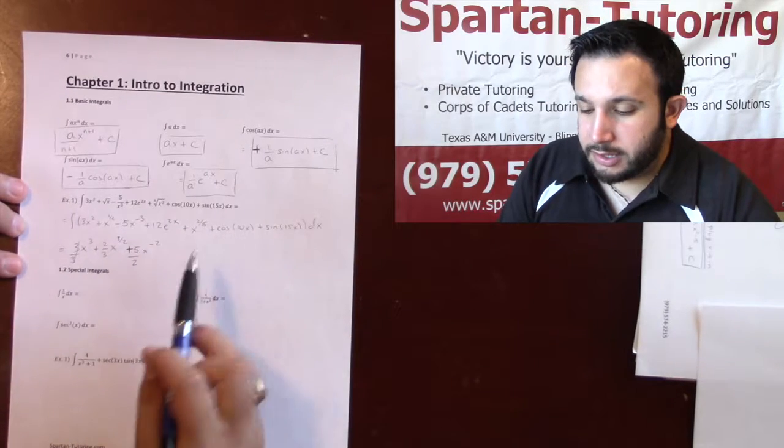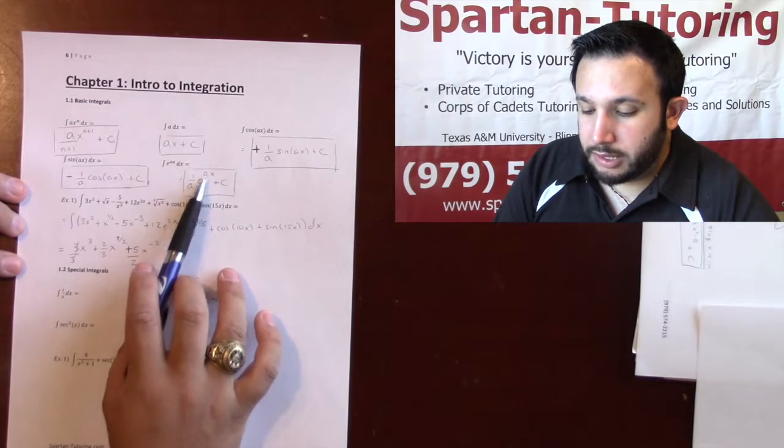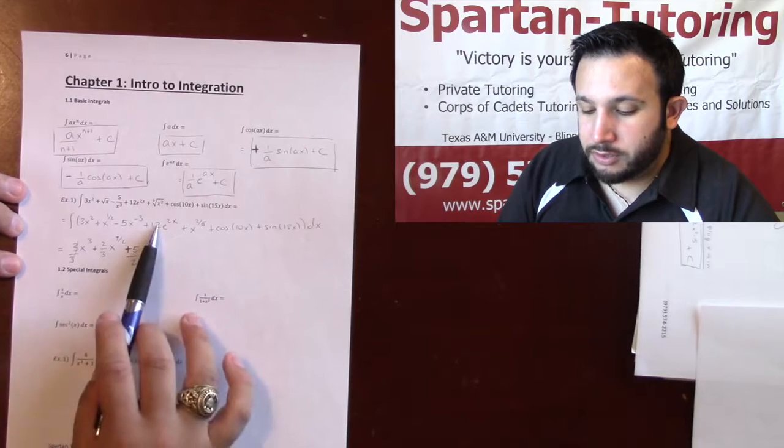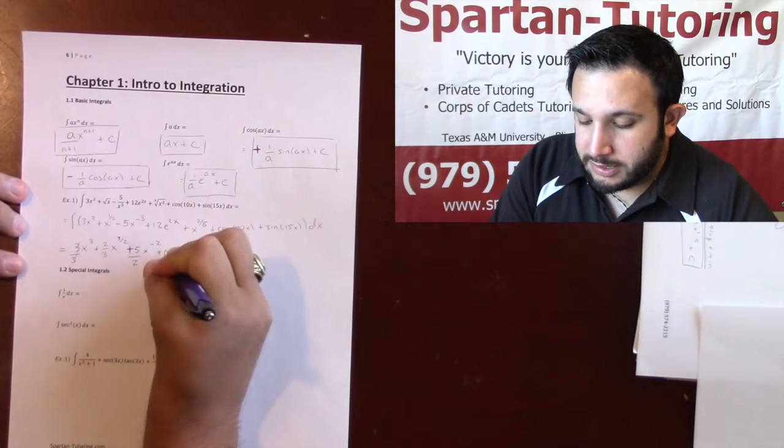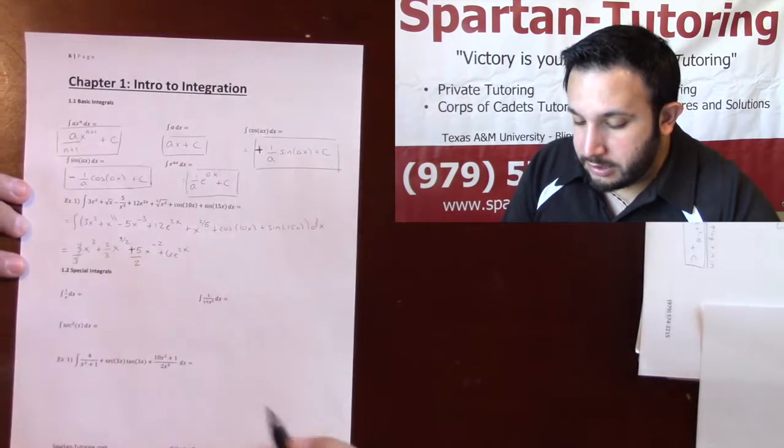For the 12e to the 2x, anytime I have a number on top of the e just divide by 2, and I know that 12 divided by 2 is 6. So this will be plus 6e to the 2x.